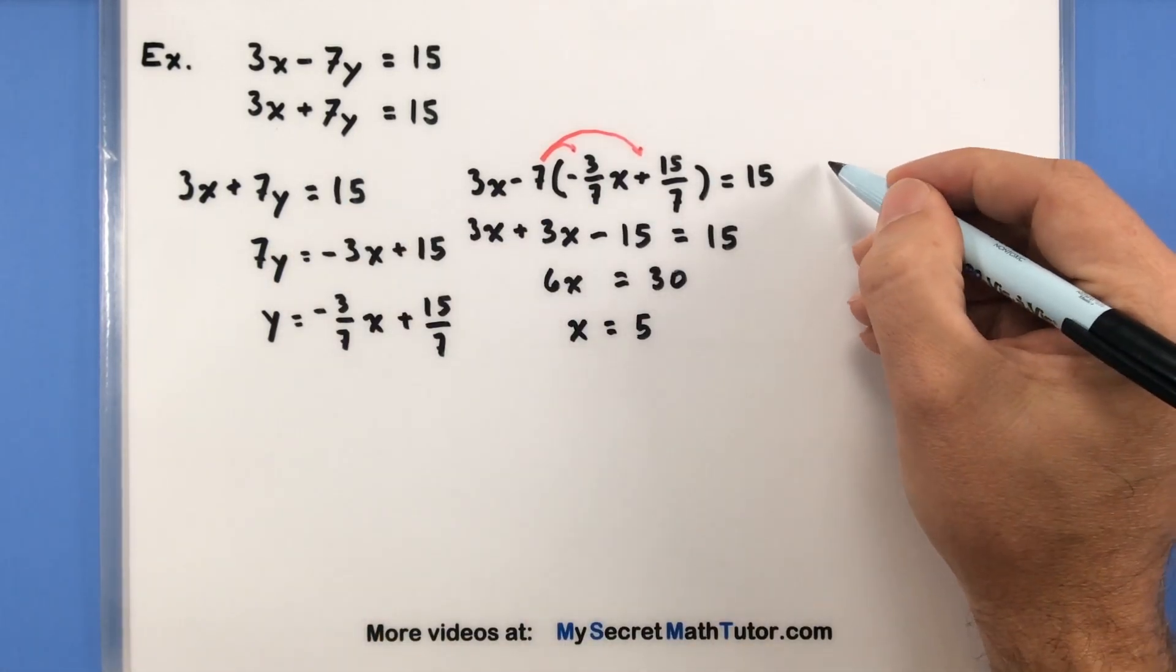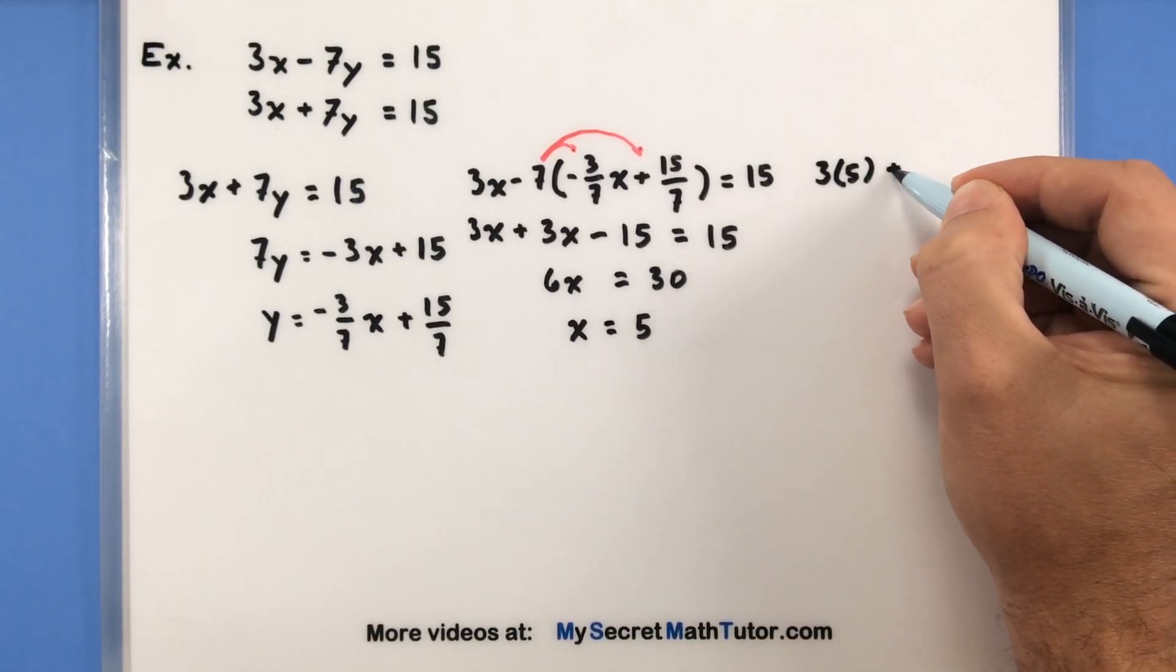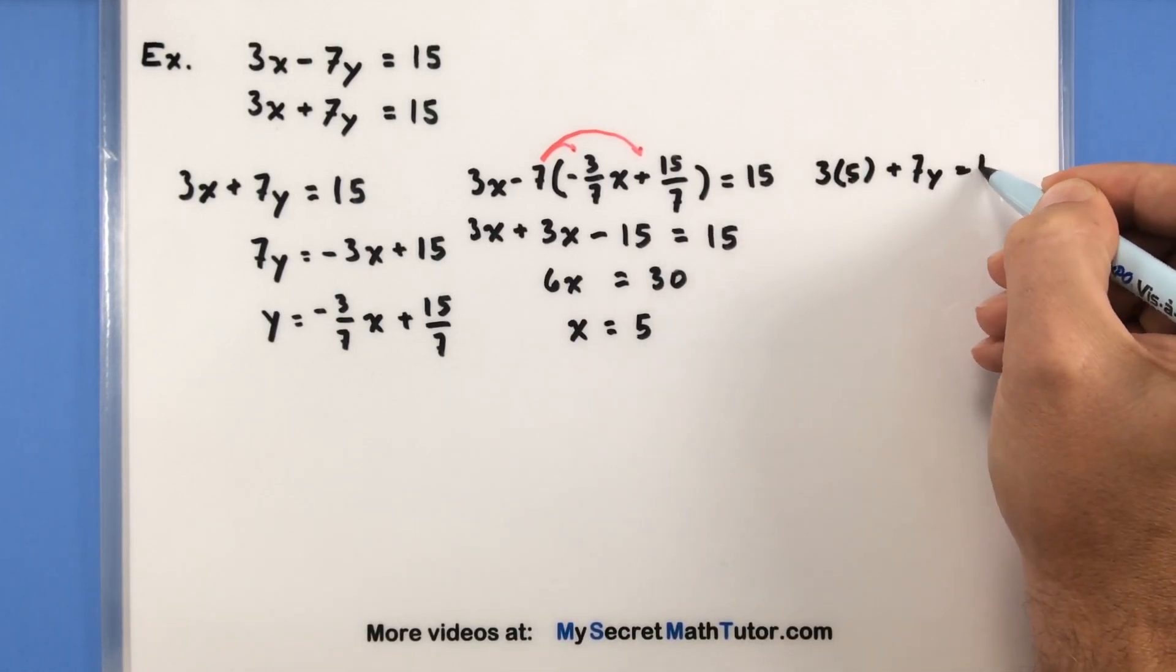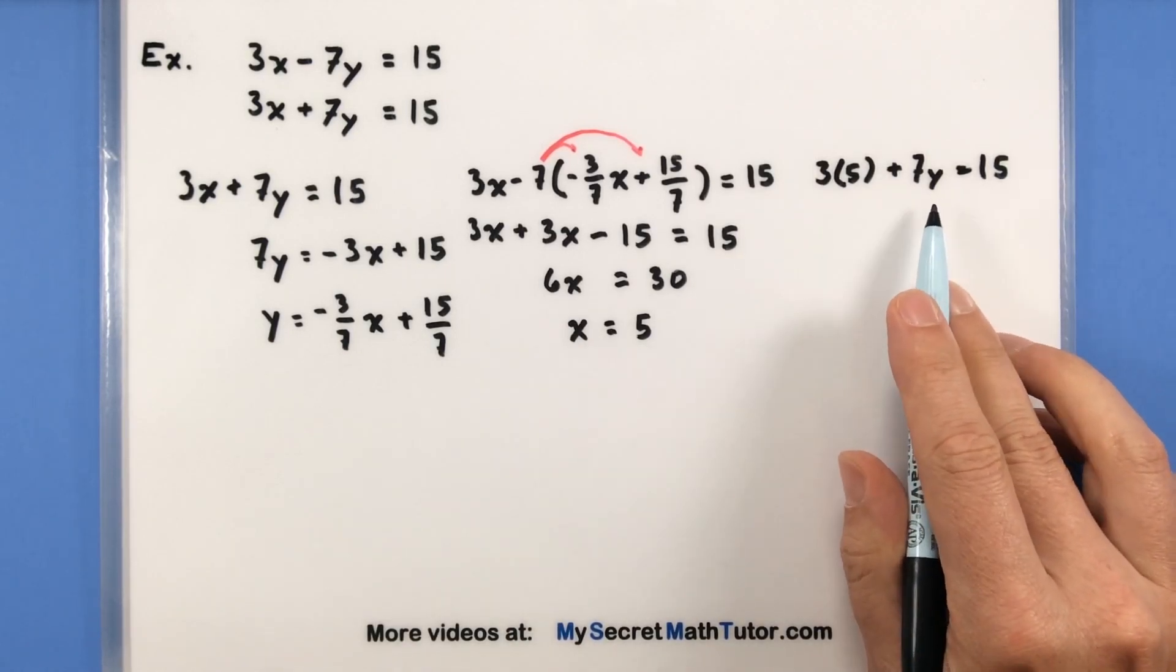let's go ahead and take it back to the original equation just for fun. So let's go 3 times 5 plus a 7y equals 15. And now we're solving for the remaining variable. In this case, we're solving for y.